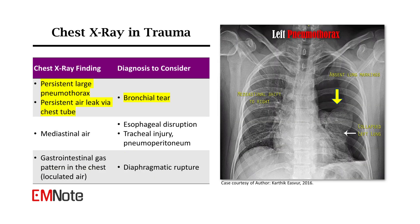A persistent large pneumothorax or air leak after chest tube insertion may signify a bronchial tear.